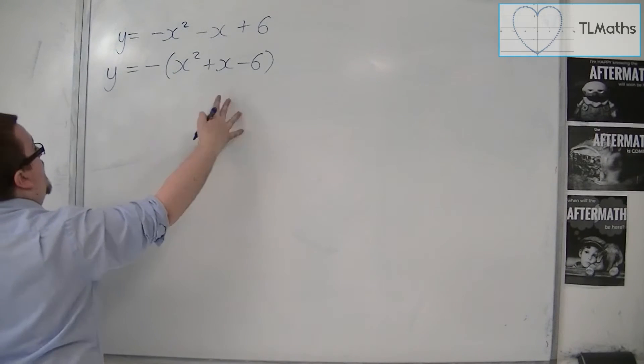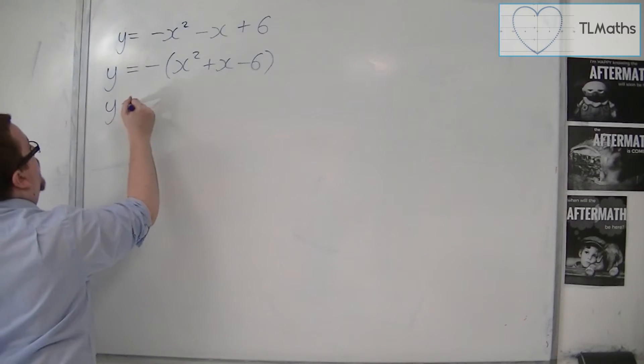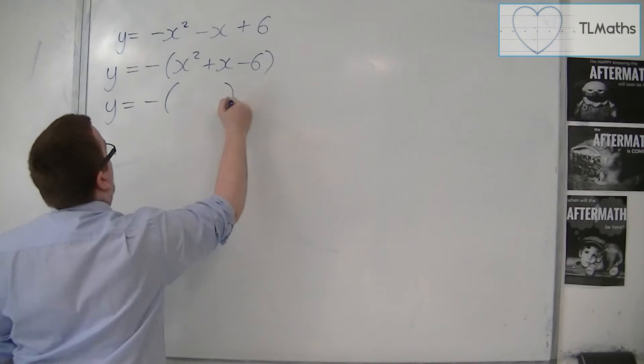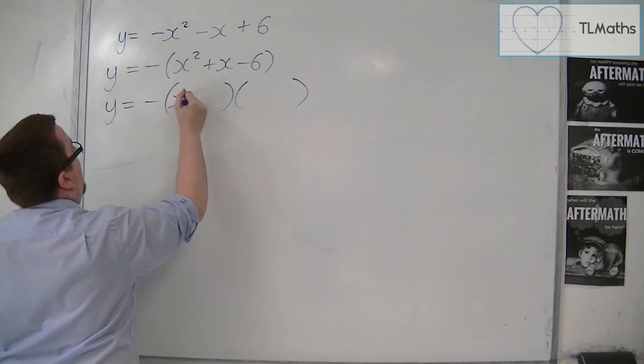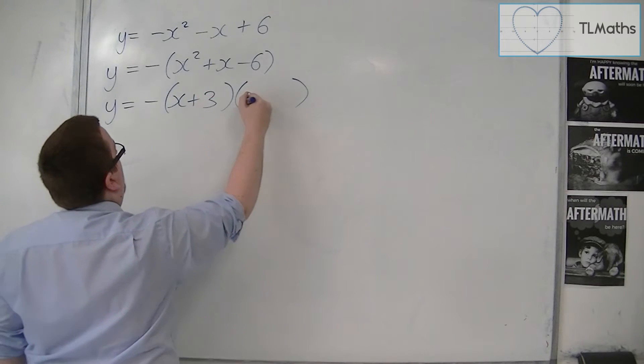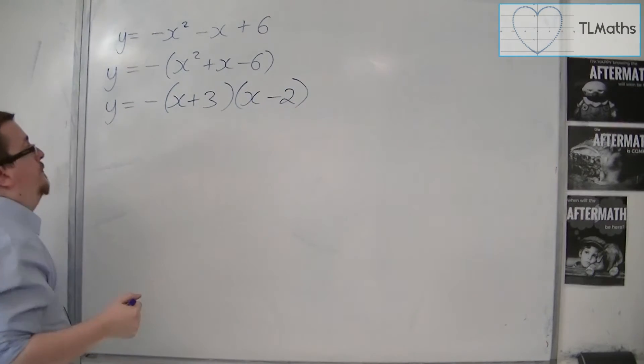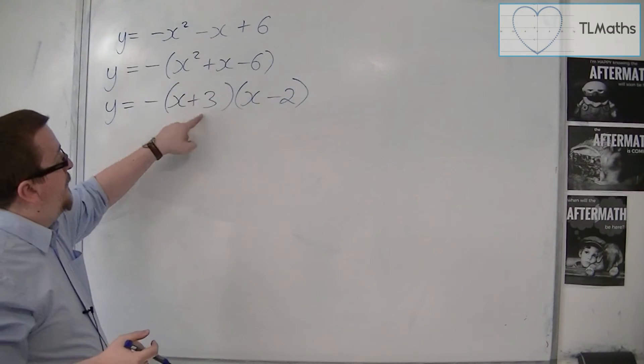So what you can now do is factorise this bracket. So we would need x plus 3 and x minus 2 in order for that to factorise to that.